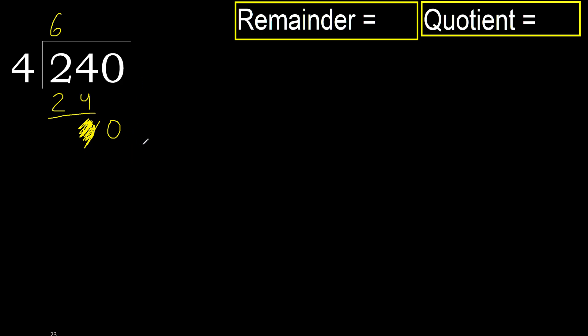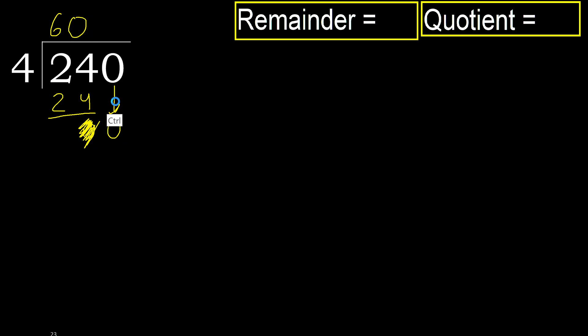That is not a number, therefore finish it here — complete. Here, always complete with 0. Complete with 0 because here we finish it with this number. Here, always 0.